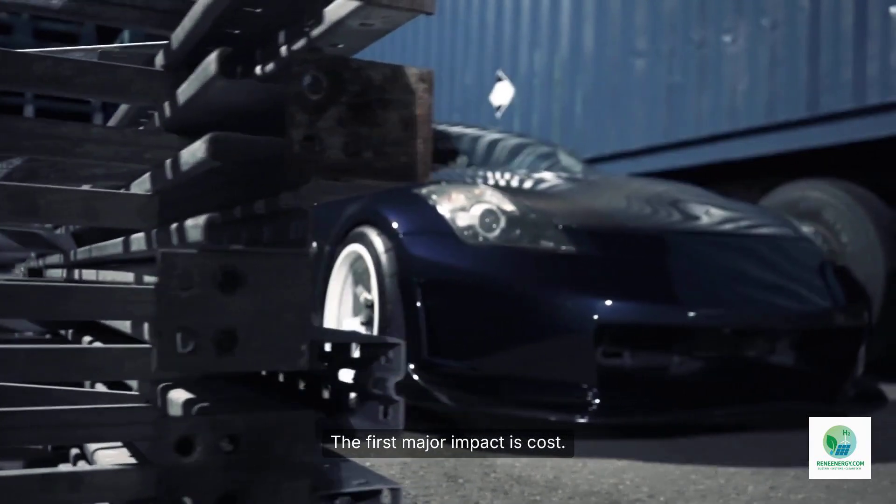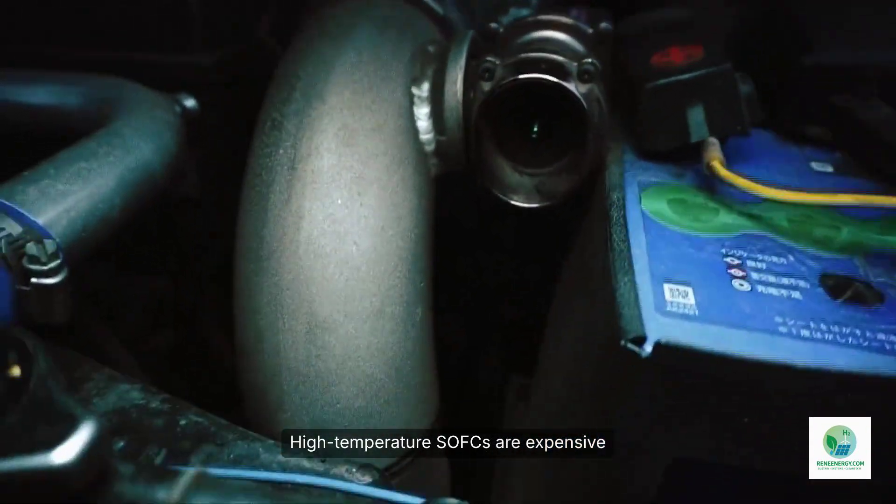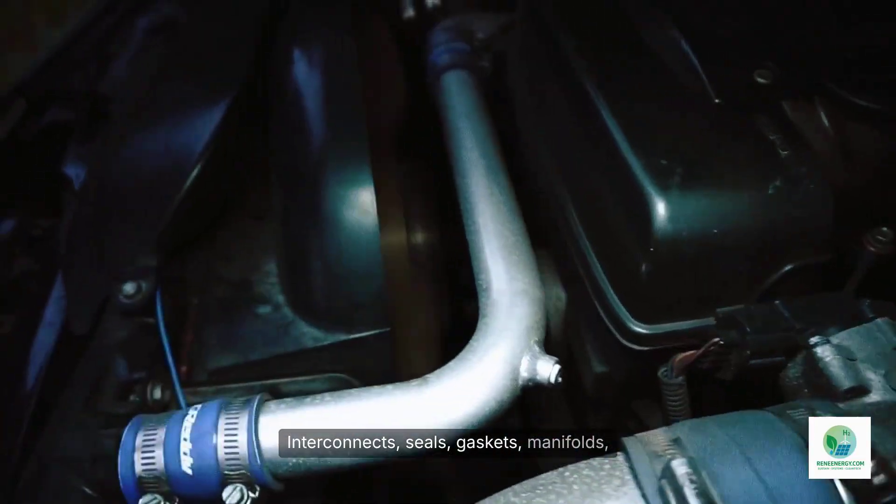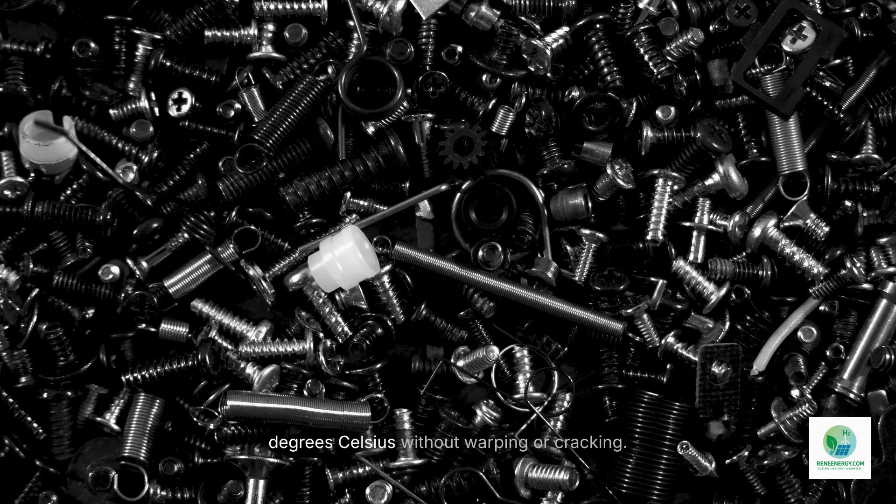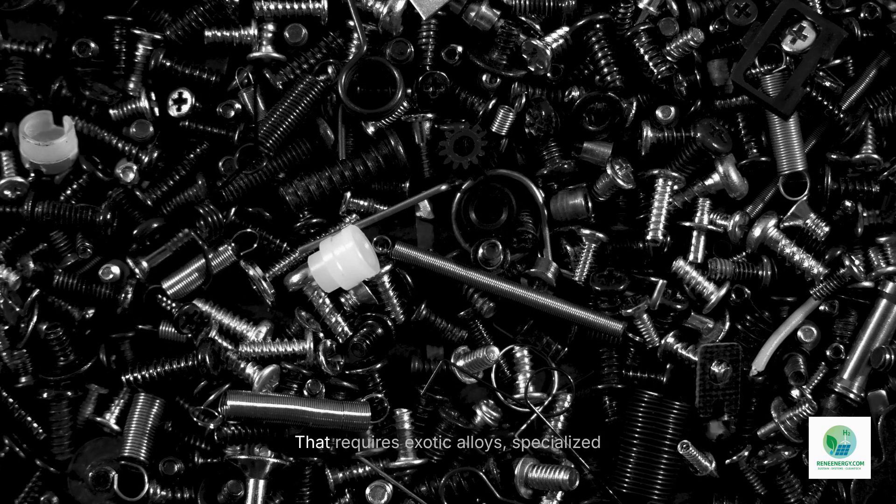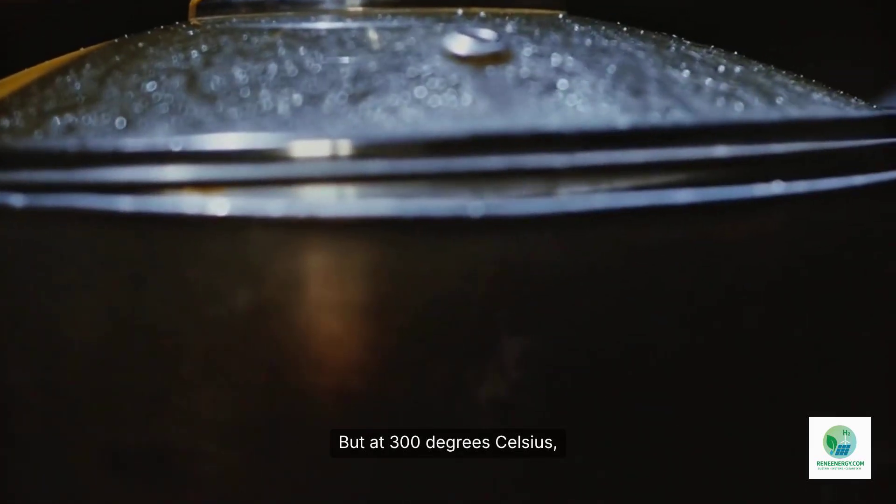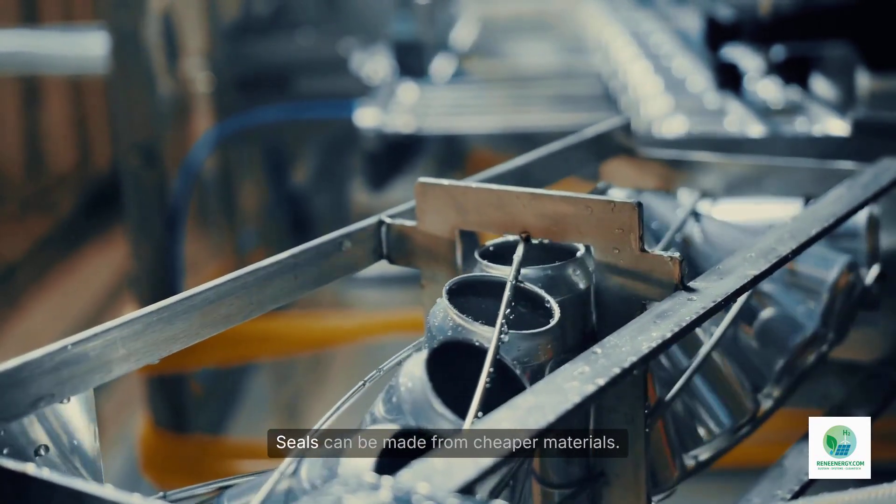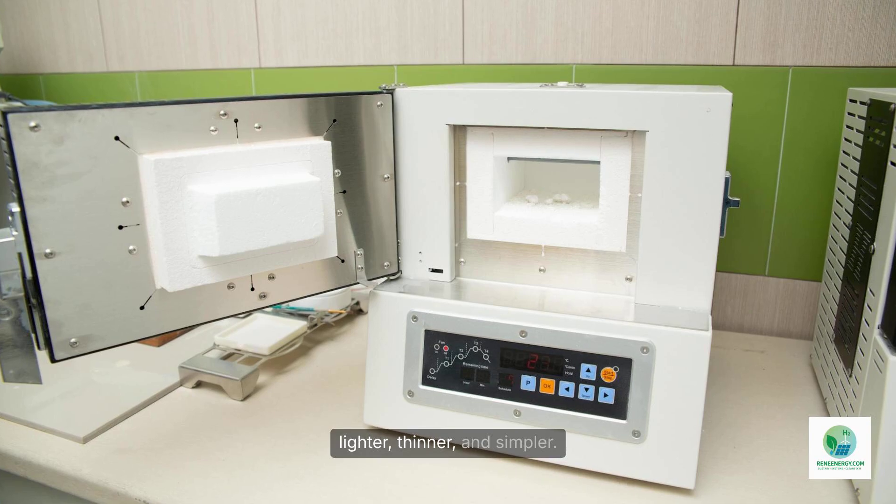The first major impact is cost. High-temperature SOFCs are expensive because they rely on materials that can withstand extreme heat. Interconnects, seals, gaskets, manifolds, and housings all have to survive 700 to 800 degrees Celsius without warping or cracking. That requires exotic alloys, specialized ceramics, and very thick insulation. But at 300 degrees Celsius, the game changes instantly. Suddenly, stainless steels become viable. Seals can be made from cheaper materials. The entire structure can be lighter, thinner, and simpler.